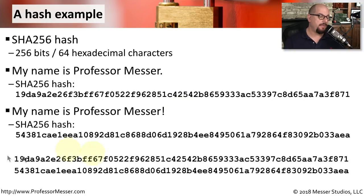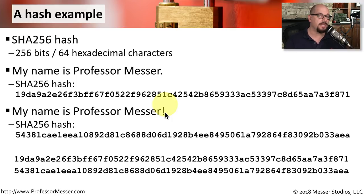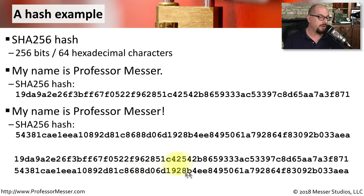If we compare these two hashes, you can see they are very different from each other, even though the original messages were very similar — the only difference was the punctuation at the end. Because this hashing algorithm is designed to create very different hashes, we can see that there is a remarkable difference between one hash and the other.